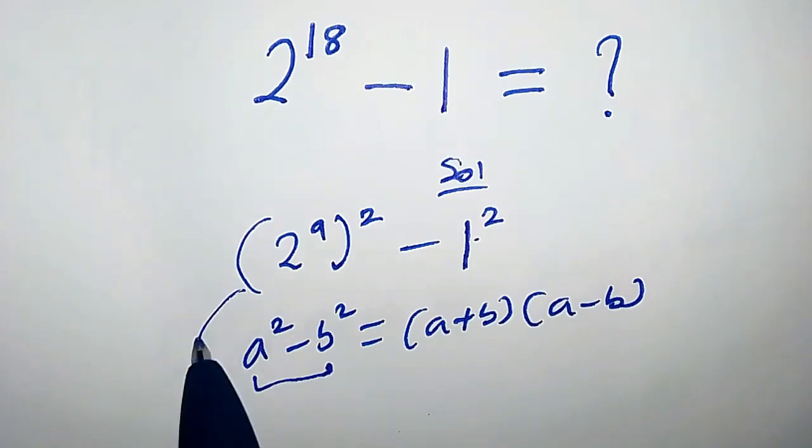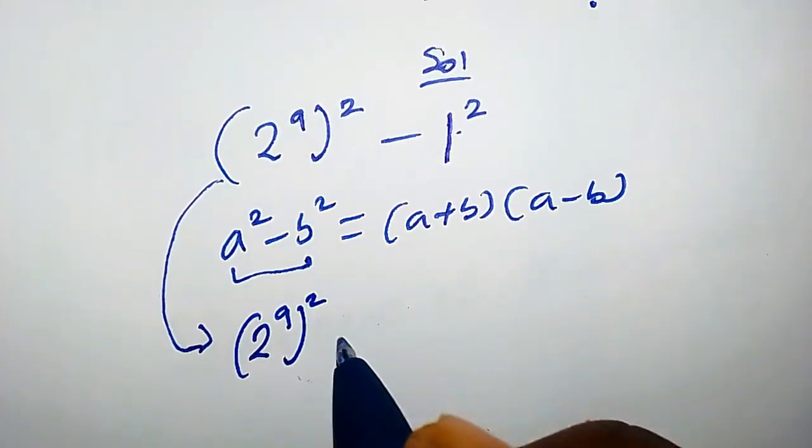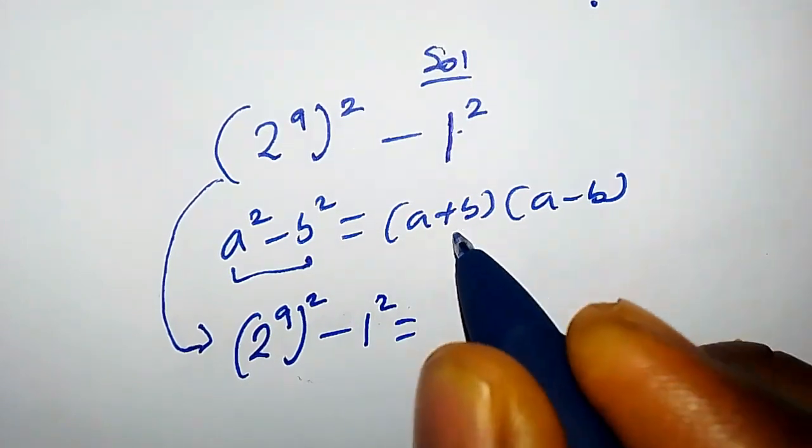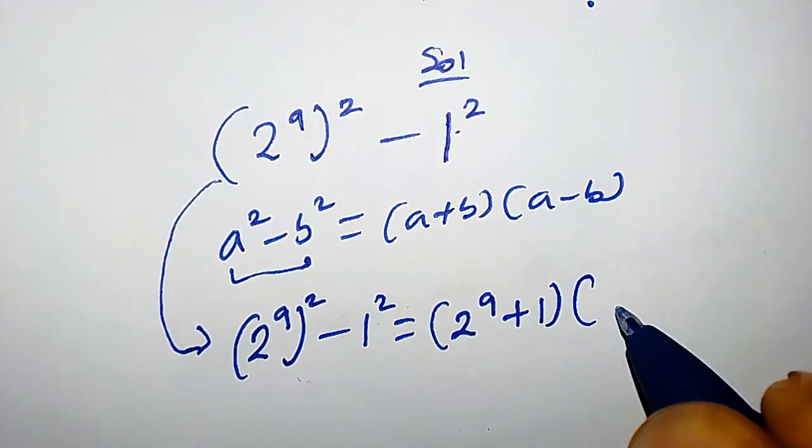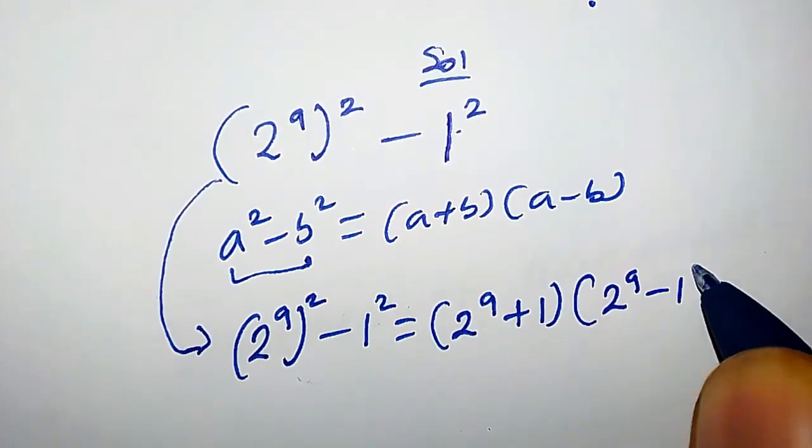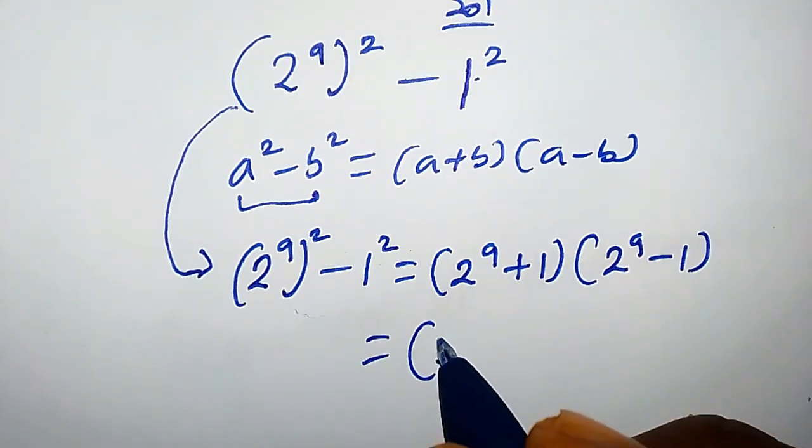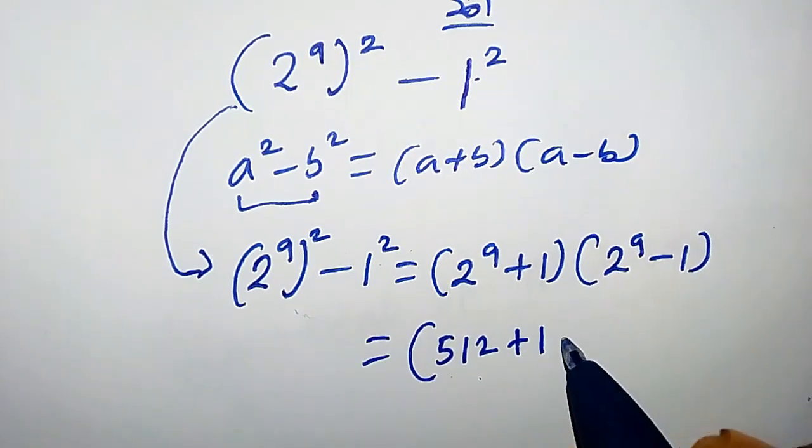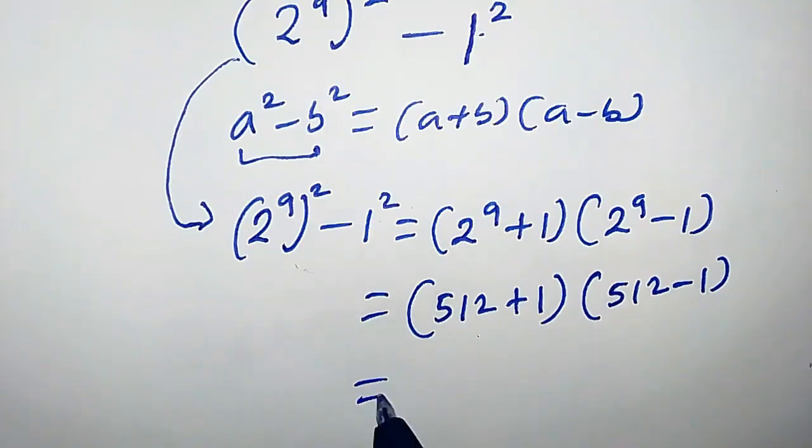So that means from here we're gonna have 2 to the power of 9 times 2 minus 1 squared equals 2 to the power of 9 plus 1 times 2 to the power of 9 minus 1, which gives 2 to the power of 9, that is 512, plus 1 times 512 minus 1.